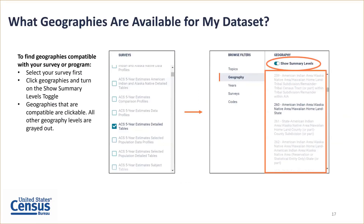To find what geographies are available for your dataset, start with whatever is most important to you. For example, if you know you want data from the ACS five-year detailed tables, select that survey first. Then click Geography in the advanced search and turn on the Show Summary Levels toggle. Compatible geographic areas will be clickable, and incompatible ones will be grayed out.